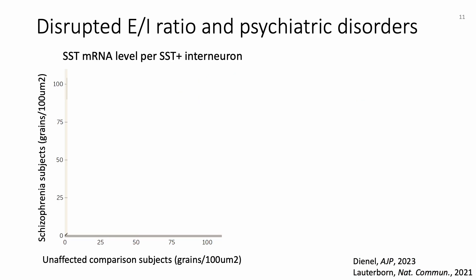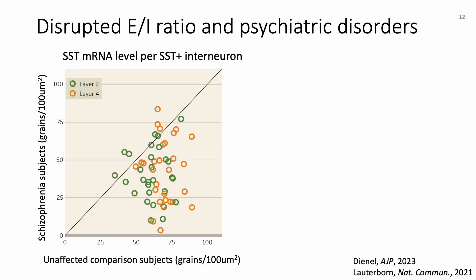On the other hand, if the brain fails to maintain the EI ratio balance, the disrupted EI ratio has been shown to associate with psychiatric disorders. For example, considering somatostatin or SST interneurons, which are responsible for mediating neuronal inhibition, comparing the mRNA level of SST between subjects diagnosed with schizophrenia and unaffected comparison subjects, there are generally lower levels of transcription per SST-positive neuron for schizophrenia subjects, suggesting lower inhibition or an elevated EI ratio.